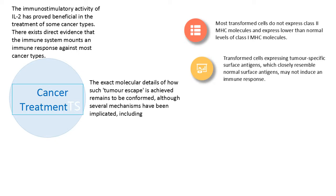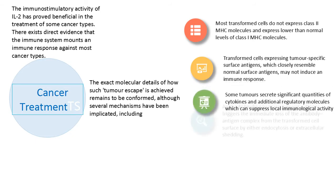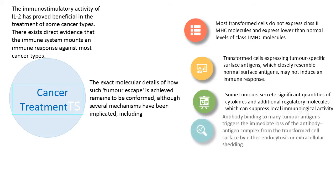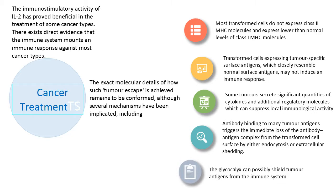Transformed cells expressing tumor-specific surface antigens which closely resemble normal surface antigens may not induce an immune response. Furthermore, some tumor antigens, while not usually expressed in adults, were expressed previously during the neonatal period and are thus believed by the immune cells to be self. Some tumors secrete significant quantities of cytokines and additional regulatory molecules which can suppress local immunological activity — for example, transforming growth factor beta is capable of inhibiting lymphocyte and macrophage activity. Antibody binding to many tumor antigens triggers the immediate loss of the antibody-antigen complex from the transformed cell surface by either endocytosis or extracellular shedding. The glycocalyx can possibly shield tumor antigens from the immune system.